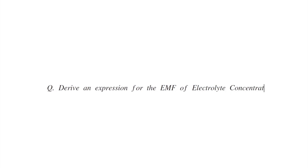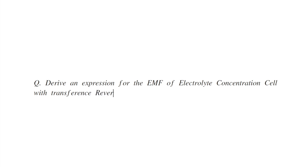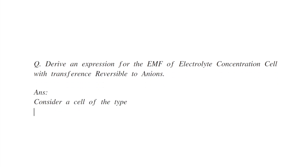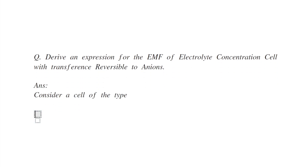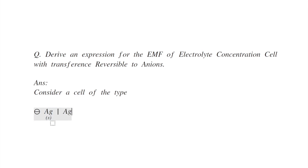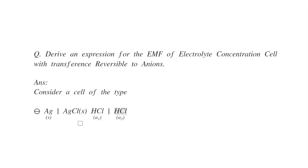Derive an expression for the EMF of electrolyte concentration cell reversible to anion with transference. Consider a cell where silver is in contact with silver chloride, in contact with HCl of activity A1, and another electrode has HCl of activity A2, silver chloride solid, and silver. These two half cells are connected with a porous partition.